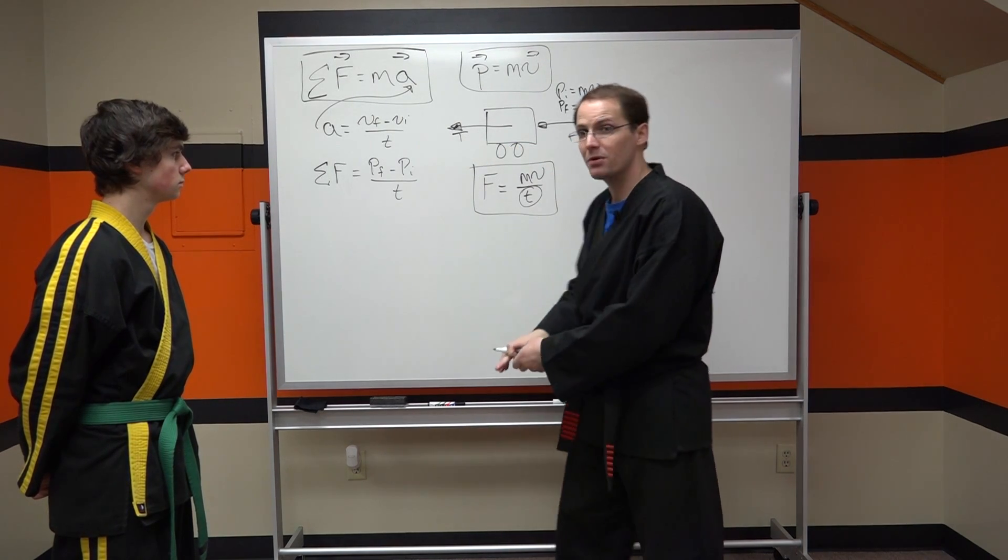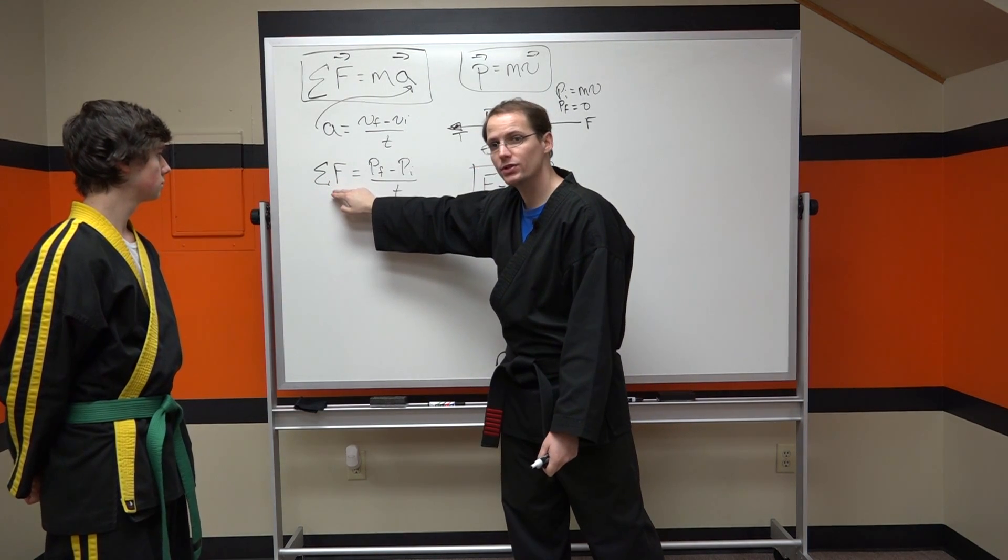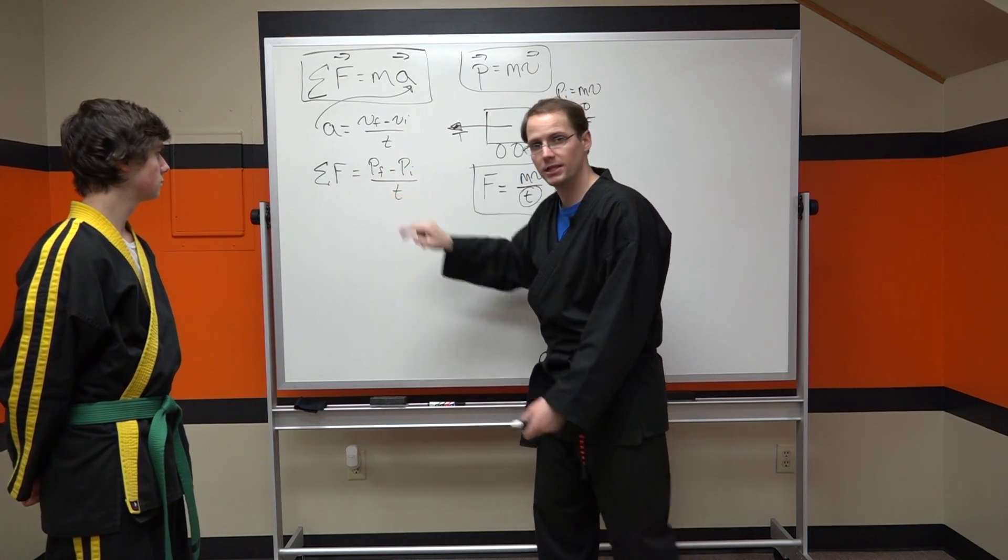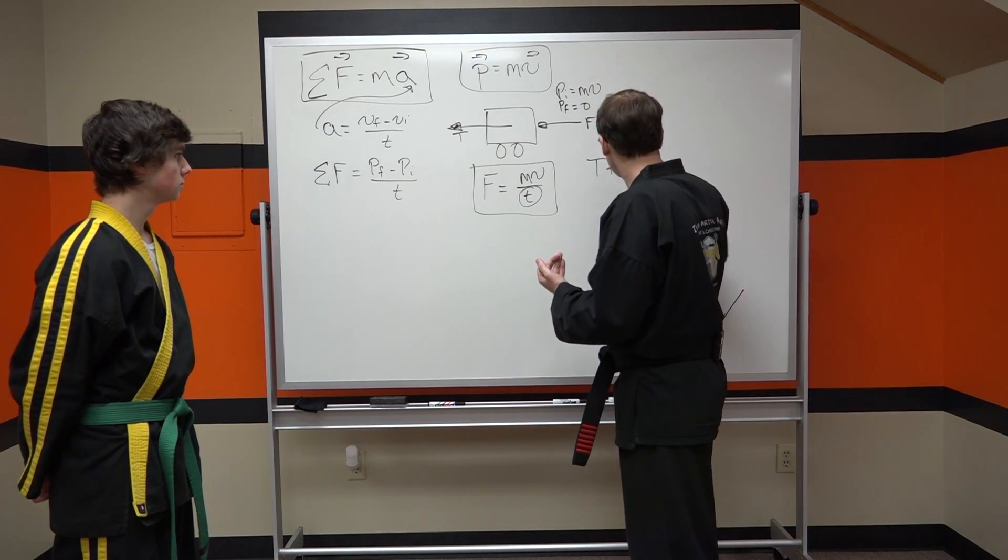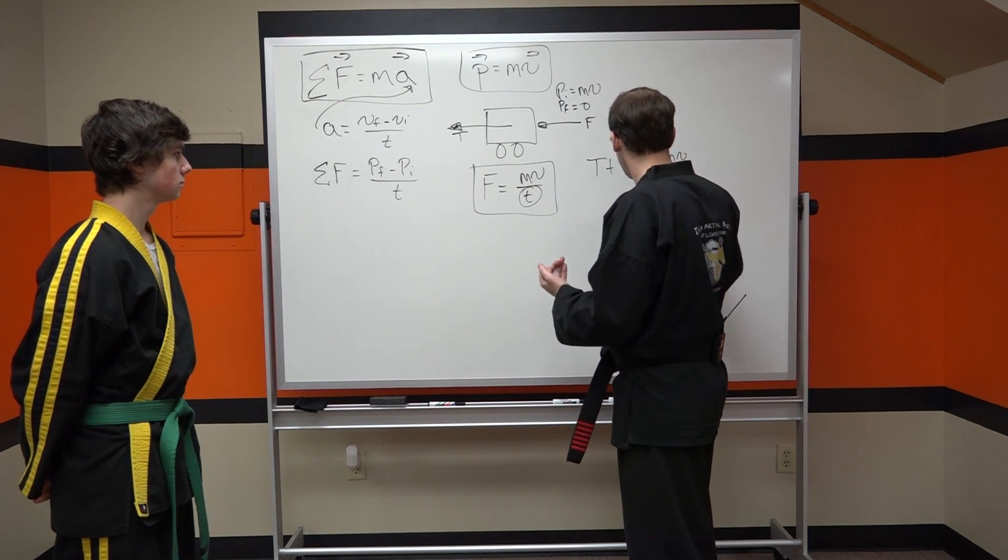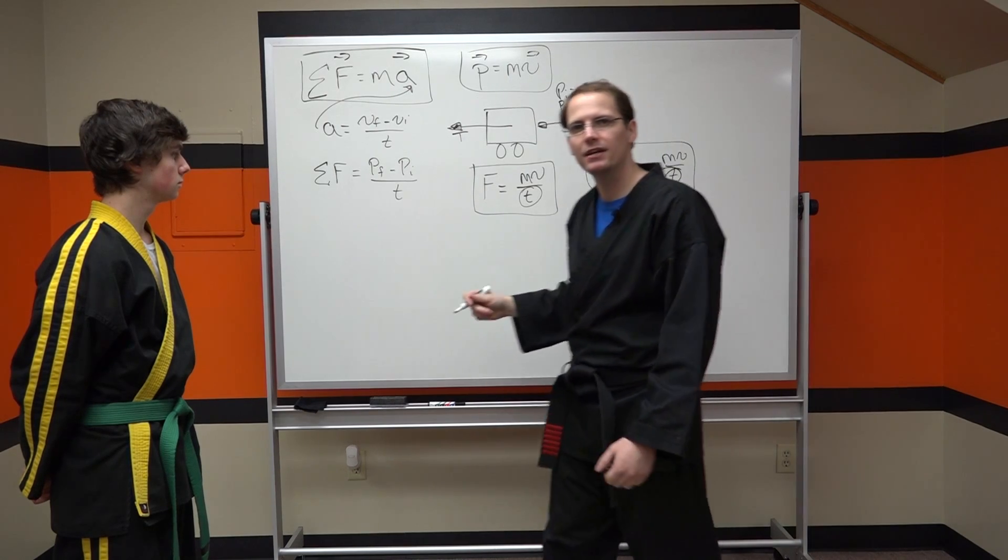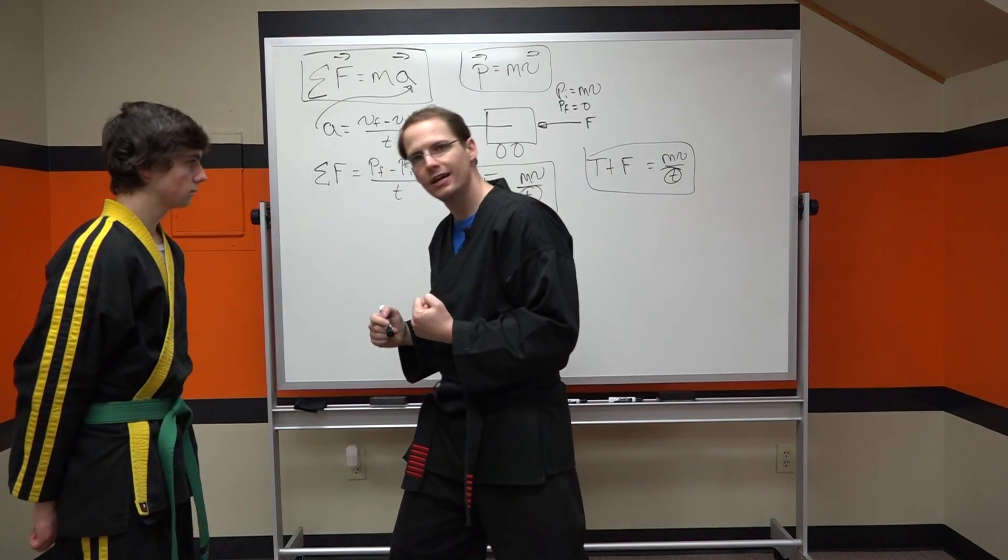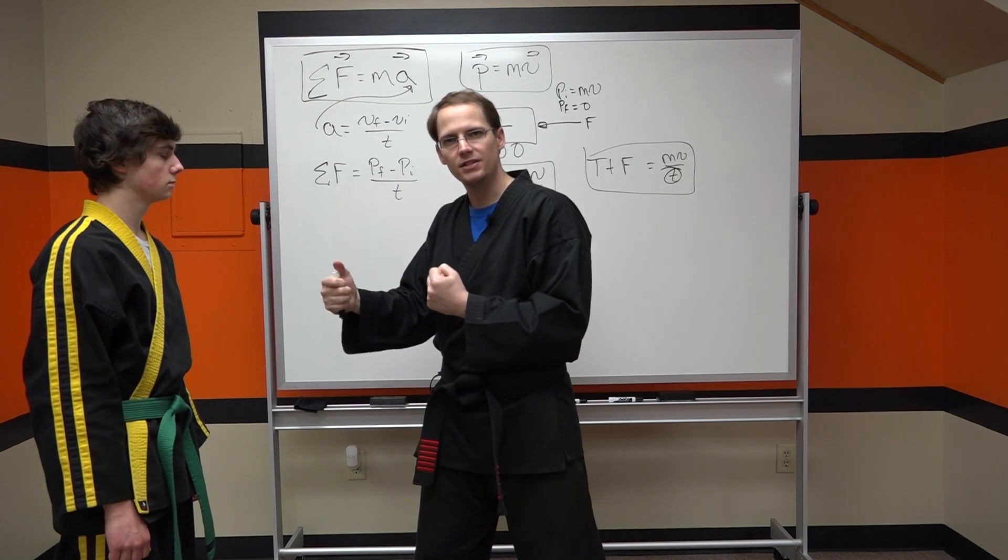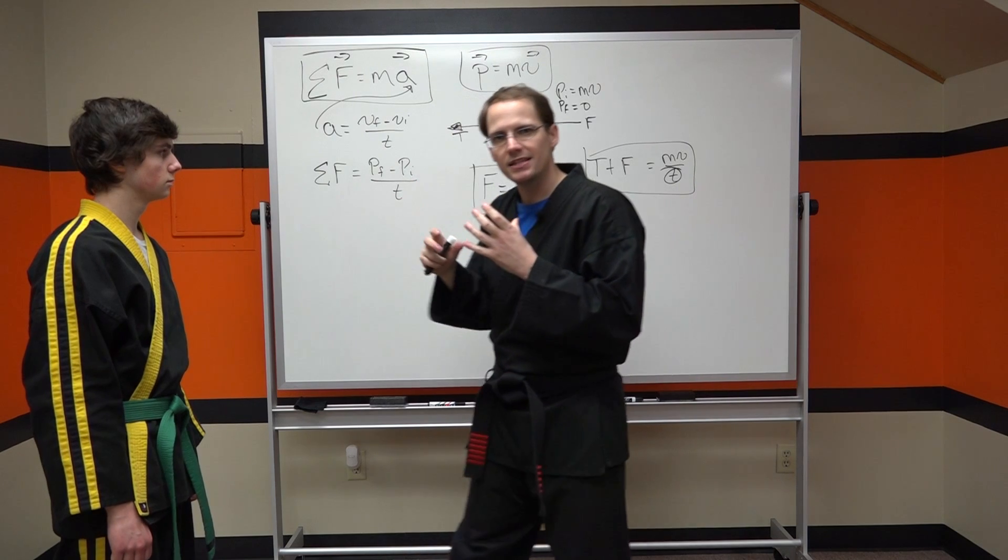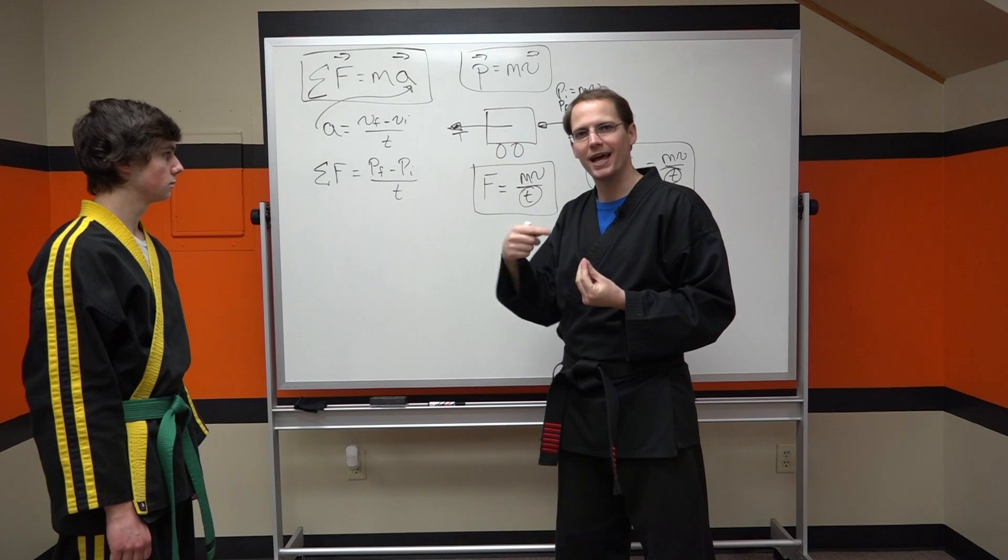So now F does not equal mv over t. Now we have a new equation because remember, what does Newton's second law tell us? It's the net force that is equal to the change in momentum over time. So now it would be whatever that tension force plus the force I'm applying is equal to the change in momentum over time. So certainly we've now decreased our time but we've added another force and that force is coming from us, not Justin. He's certainly absorbing some of my momentum and he's delivering a force that's taking away some of that initial momentum. But now when I withdraw, that's not him, that's me.